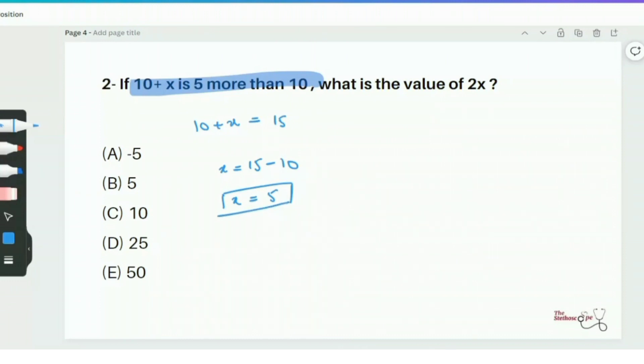Now you might be tempted to say that option B, that's 5, is the correct answer. But remember, we are here solving for 2x. So we have to multiply the value of x by 2. That's 5 times 2 is equal to 10. Which means option C is the correct answer.